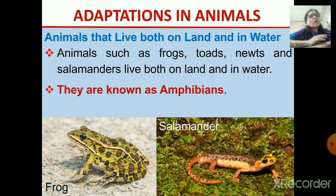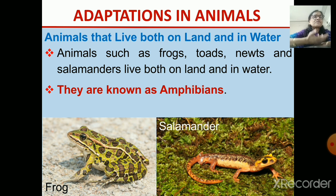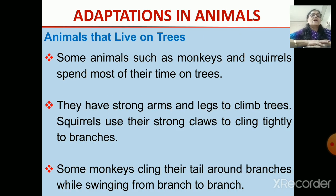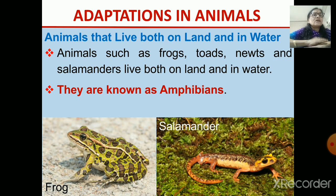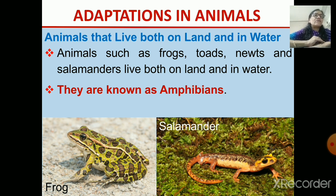Some animals can live on land and in water both. The examples are frogs, toads, salamanders, and crocodiles — they can live in water and on land. When they are on the land, they use their lungs to breathe. While in the water, they breathe through their moist skin.